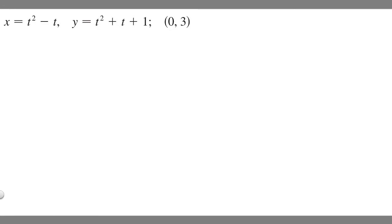In this problem, we're told to find an equation of the tangent to the curve at the given point. We're given parametric equations, x = t² - t and y = t² + t + 1, and this point here, (0, 3). We need to find the equation of the tangent to the curve.